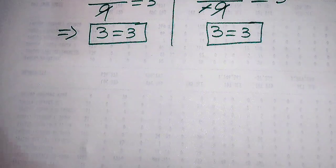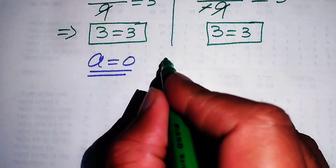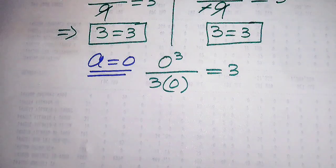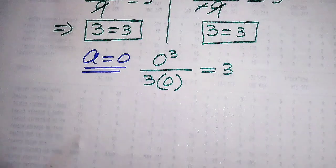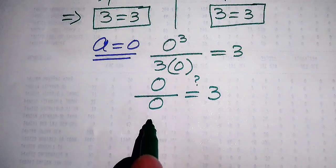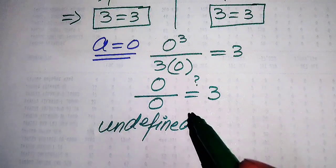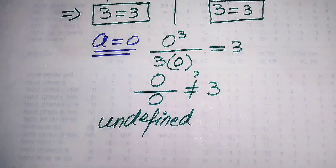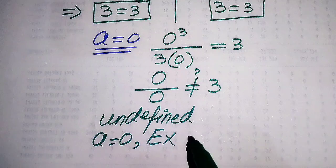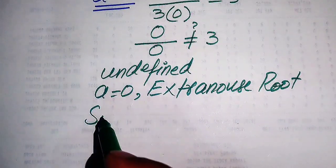Now we verify the third root, a equals zero. Substituting into the left hand side gives 0 cubed divided by 3 times 0, which becomes 0 over 0. This form is called the indeterminate form, or undefined. Since the left hand side is undefined, both sides are not equal, which means a equals zero is an extraneous root because it does not satisfy the given equation.